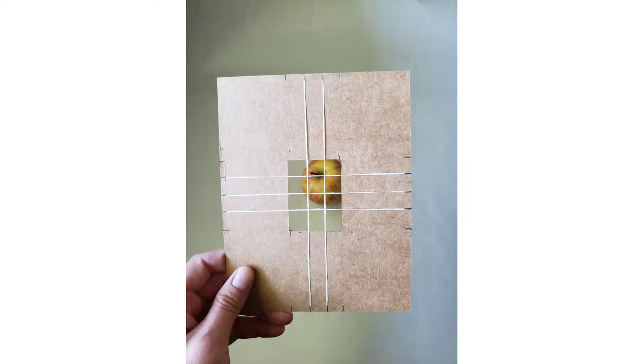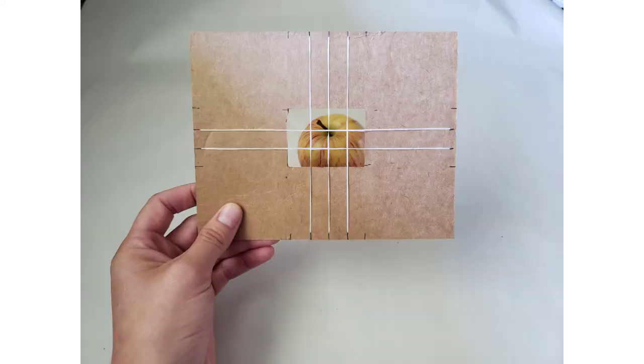The next steps are optional, but we'll show you how to add dental floss to create a grid, which breaks up the composition into smaller squares and makes it easier to sight.